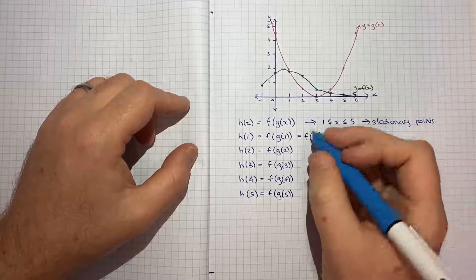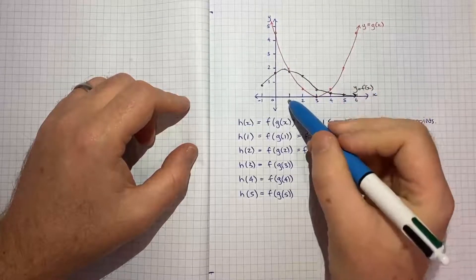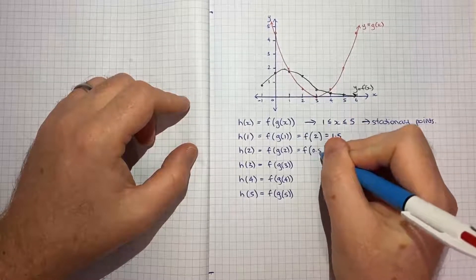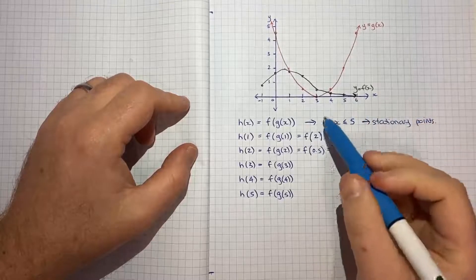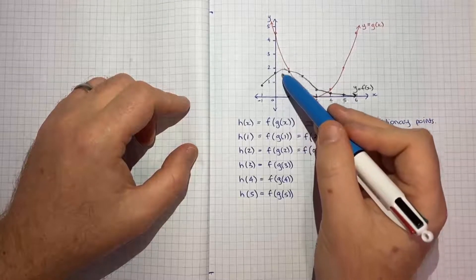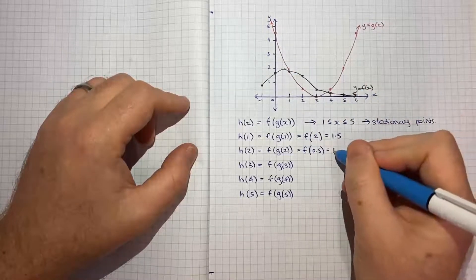Now if I repeat that process, f of g of 2, at point 2 the red curve is about a half. So at x is equal to half, f of x is a touch under 2. I might just say 1.9.